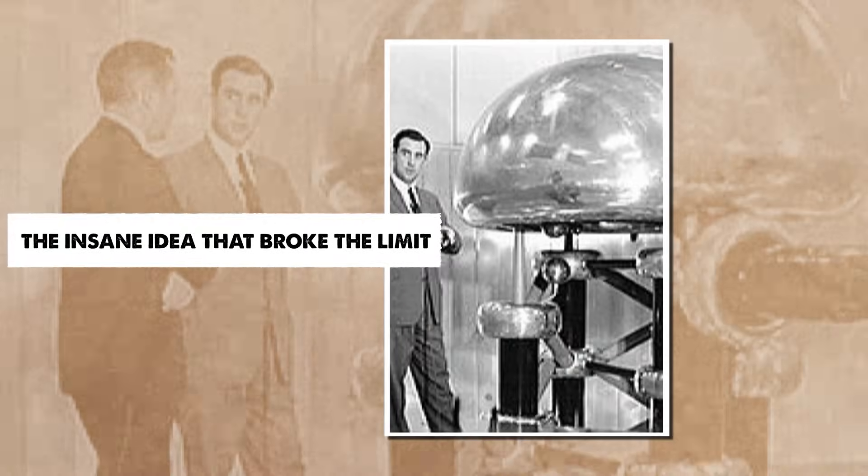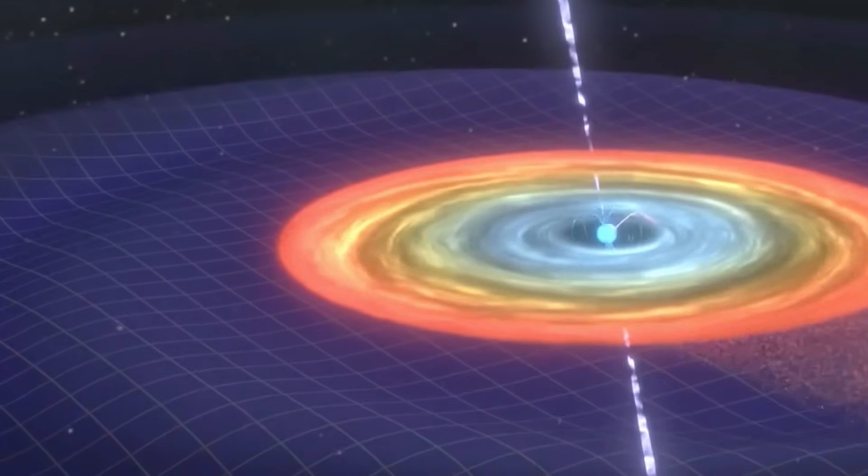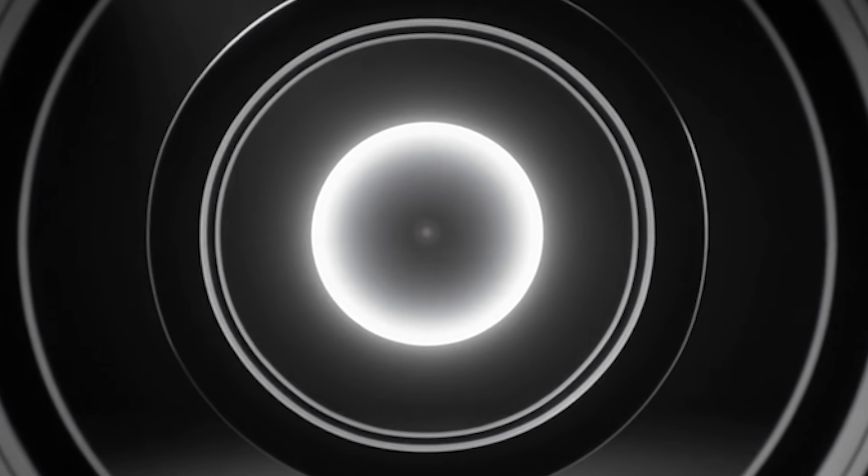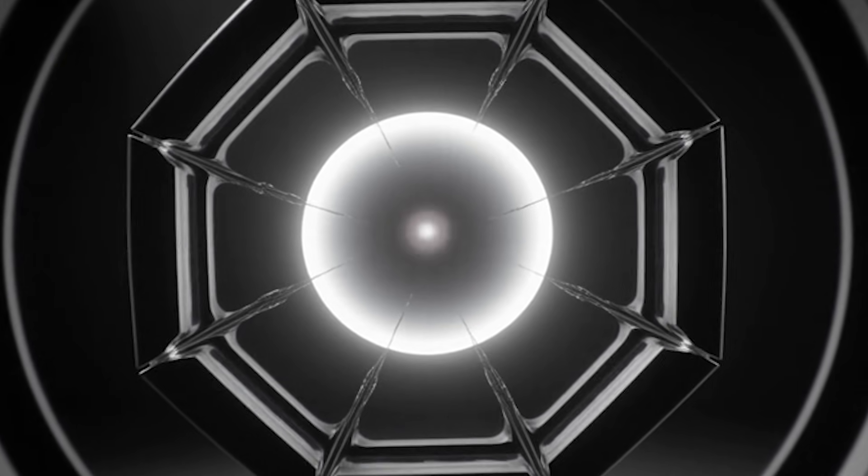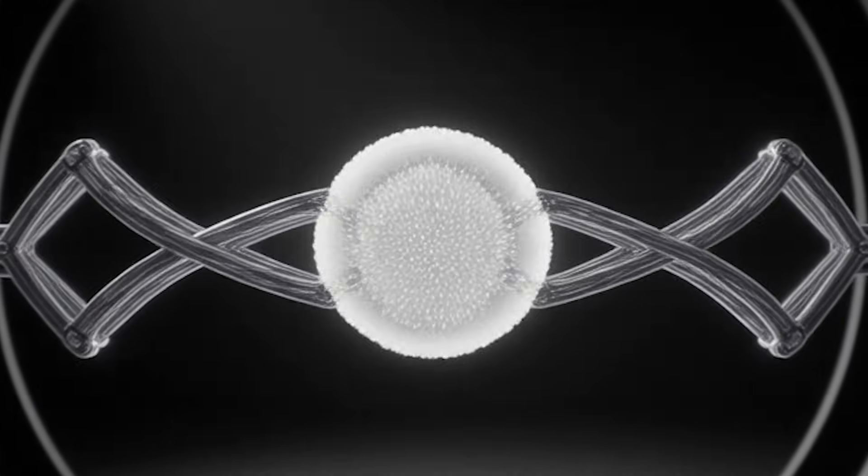The insane idea that broke the limit. Knutt Urban, Harold Rose, and Max Heider believed the only way to beat spherical aberration was to break the symmetry of the lens. This sounded crazy to most experts. Symmetry is the foundation of clear imaging. Remove it, and the image usually collapses into chaos. But the trio thought otherwise.